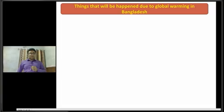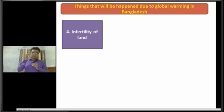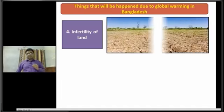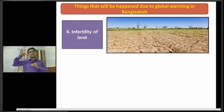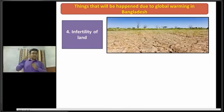Dear students, now I am going to discuss about the next impact of global warming in Bangladesh, that is infertility of land. Due to the rise of seawater, the land of the coastal areas will be inundated, so the land of the coastal areas will lose its fertility. This will happen due to global warming in Bangladesh.